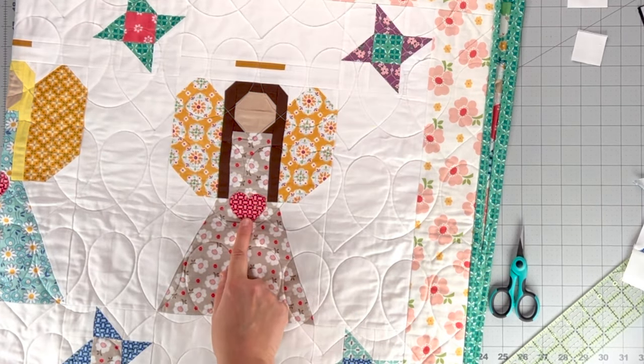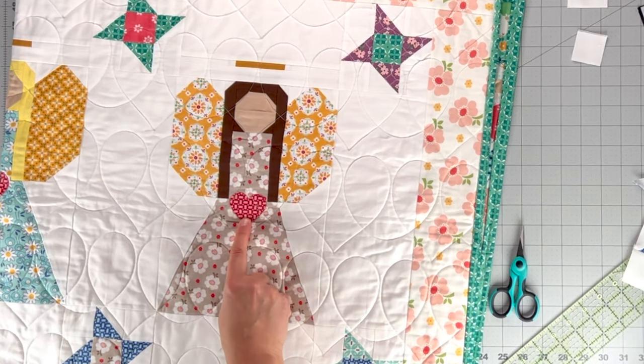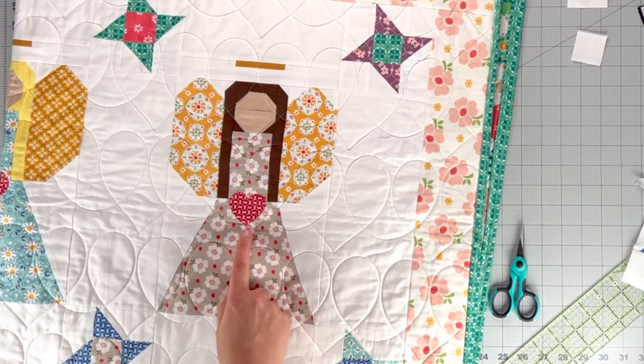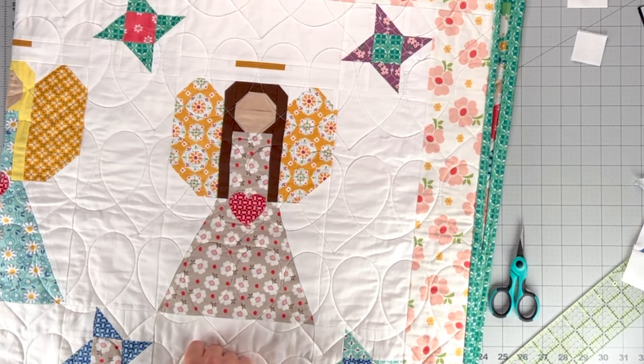And then the next step with doing our angels is we are going to put a heart applique on each angel. And this is optional, you don't have to do that. I've done raw edge applique here, and I'll show you how we'll do that.